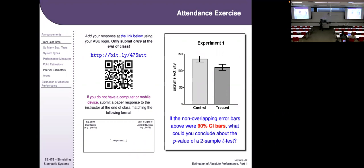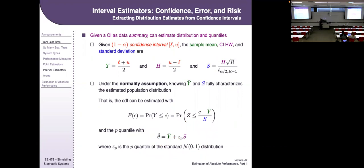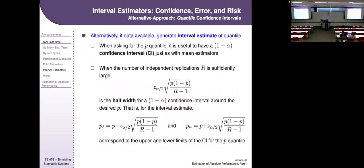From a confidence interval, you can extract the sample mean (the center), the half-width (half the total width), and estimate the standard deviation using the formula. Under the normality assumption, you get a full estimated distribution and can compute any quantile by multiplying the critical z-value for that quantile by the standard deviation and adding the mean.